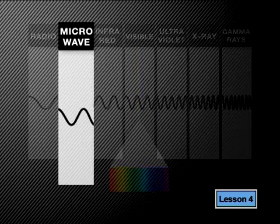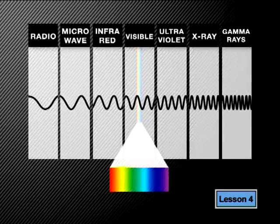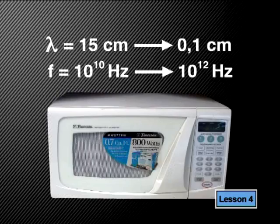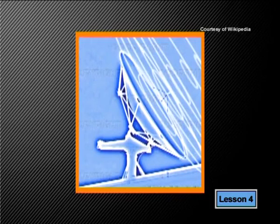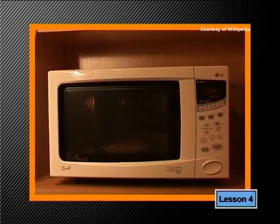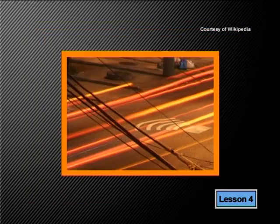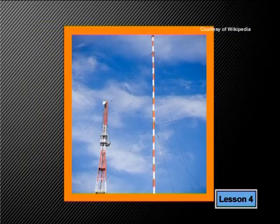Second in wavelength are microwaves. Microwaves have wavelengths between 15 cm and 0.1 cm, with frequencies ranging from 10 to the 10 Hz to 10 to the 12 Hz. People are able to generate microwaves using electron tubes called klystrons. We use microwaves in satellite communication, microwave cooking, radar speed trapping guns, and radar air traffic control.